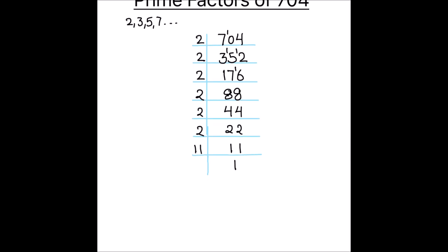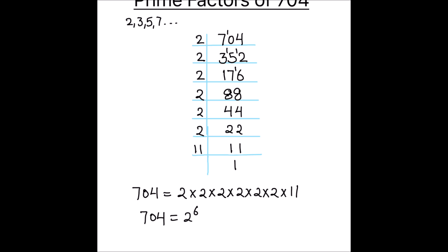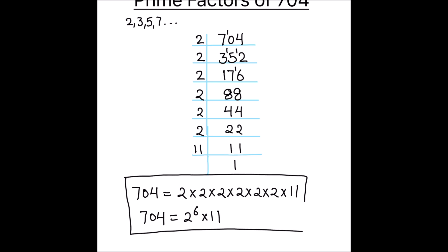Let us write 704 as the product of its prime factors. The prime factors of 704 are 2 × 2 × 2 × 2 × 2 × 2 × 11. In exponent form, we can write the factors as 2 raised to the power 6 times 11. So these are the prime factors of 704.